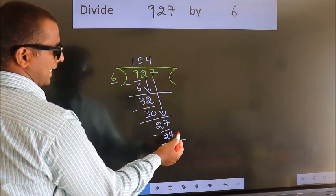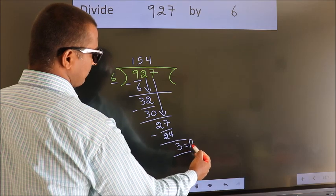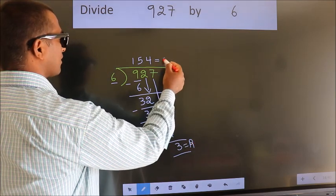No more numbers to bring down. So, we stop here. This is our remainder. This is our quotient.